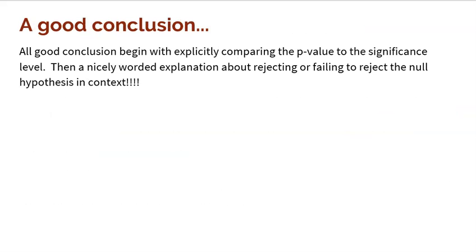A good conclusion begins with explicitly comparing the p-value to the significance level. Then you word whether you're going to reject or fail to reject, in context. You always start by saying your p-value is less than or greater than the significance level, and here's your conclusion because of that. Be very specific with that language.